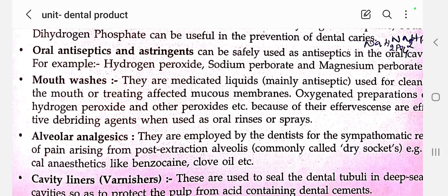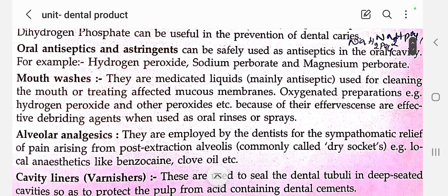What are mouthwashes? They are medicated liquids, mainly antiseptic. By gargling with a mouthwash, the mouth becomes free from germs. There are two formulations available: mouthwash water or rinses, and oral rinses or sprays. Mouthwashes are medicated liquids used for cleaning the mouth or treating affected mucous membrane. Oxygenated preparations — for example, hydrogen peroxide and other peroxides — are effective debriding agents when used as oral rinses or sprays.